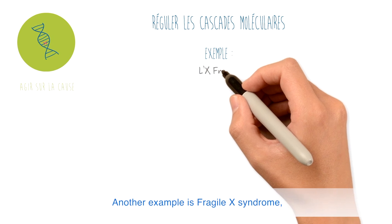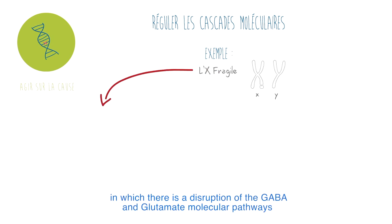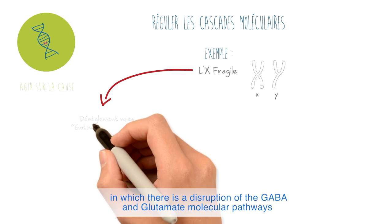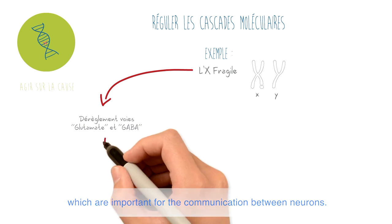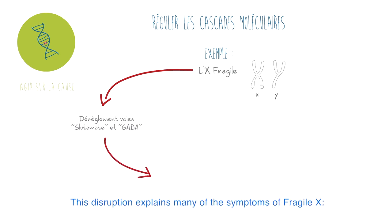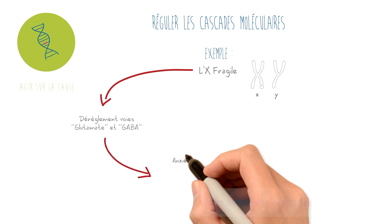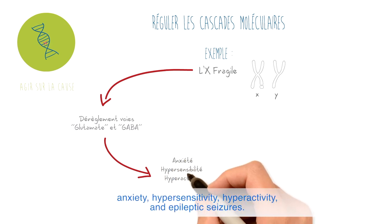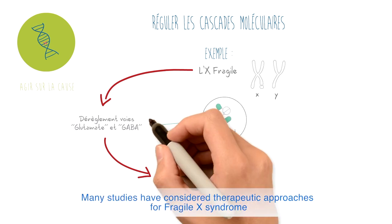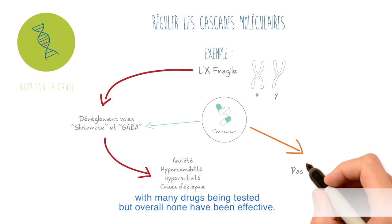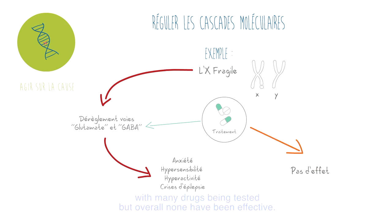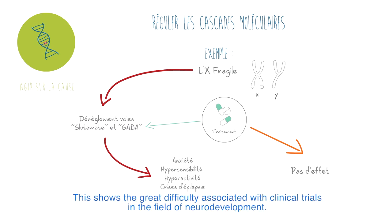Another example is Fragile-X syndrome, in which there is a disruption of the GABA and glutamine molecular pathways, which are important for the communication between neurons. This disruption explains many of the symptoms of Fragile-X: anxiety, hypersensitivity, hyperactivity, and epileptic seizures. Many studies have considered therapeutic approaches for Fragile-X syndrome, with many drugs being tested, but overall none have been effective. This shows the great difficulty associated with clinical trials in the field of neurodevelopment.